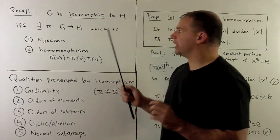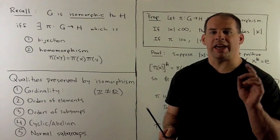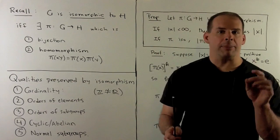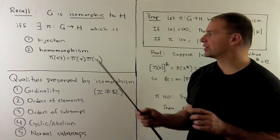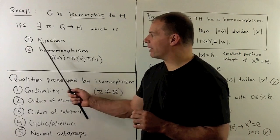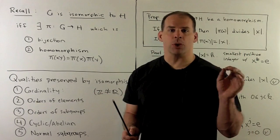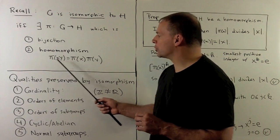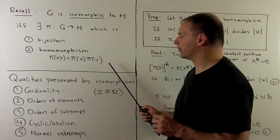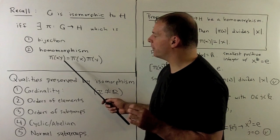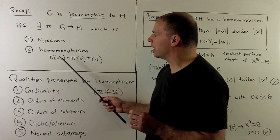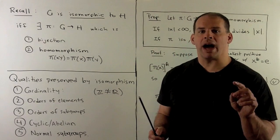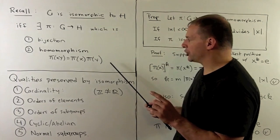Recall, we have two groups G and H, so that G and H are isomorphic if and only if there exists a mapping pi from G to H such that we have a bijection — pi is one-to-one and onto — and pi is a homomorphism, so pi preserves group multiplication. This says if I multiply X and Y in G and apply pi, it's the same as if we apply pi to X and Y in G and then multiply in H.